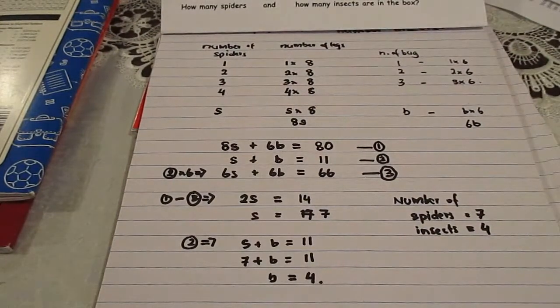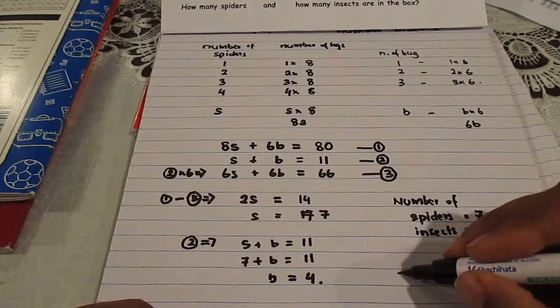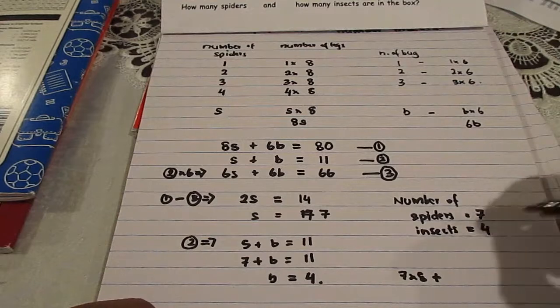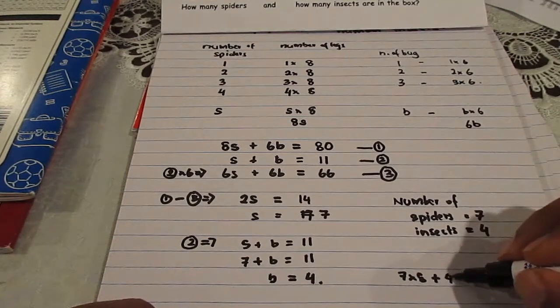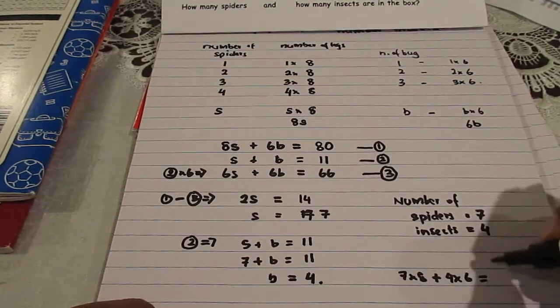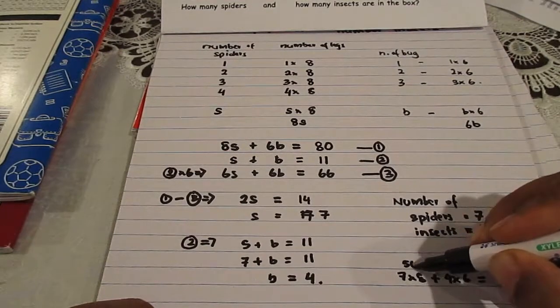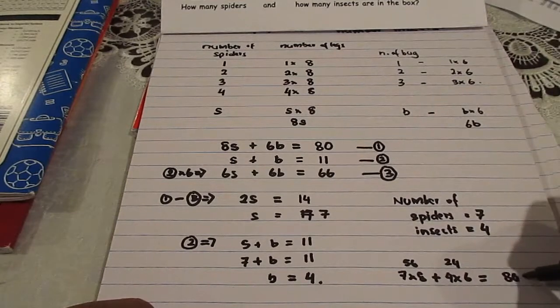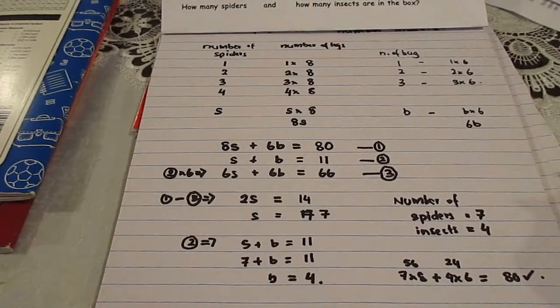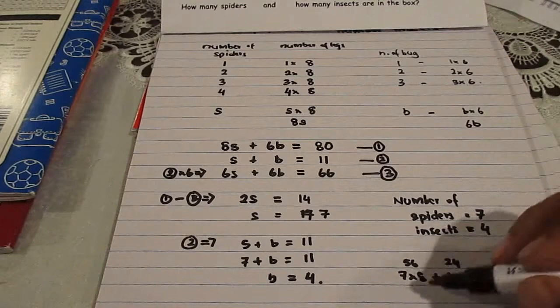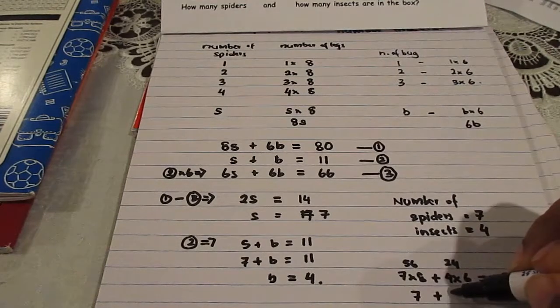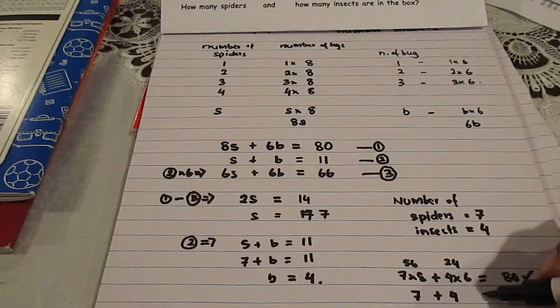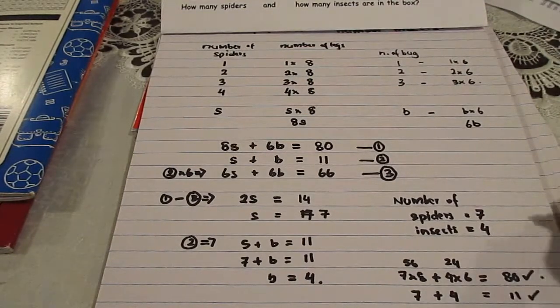And before we finish, we just do a quick check. Okay, now there are 7 spiders. 7 into 8 is the number of legs they have, plus 4 bugs, 4 into 6, will be equal to 7 into 8 is 56, 4 into 6 is 24. 24 and 56 is 80, so the first equation is okay. And then 7 plus 4, that's s plus b or the total number of heads, is 11. So that works out, so this answer is correct.